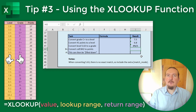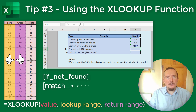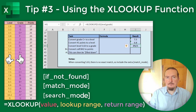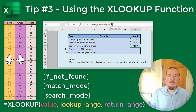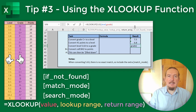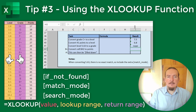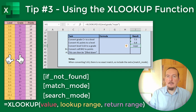The three optional additional inputs are: if not found, match mode, and search mode. If not found allows us to enter a value or text you want to display if no match is found, so rather than this function returning the NA error, I could get it to say something instead. So equals XLOOKUP 5.63, levels, grade, comma "NOPE" is going to return the value NOPE.